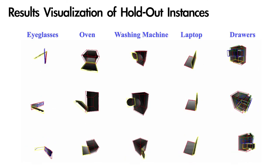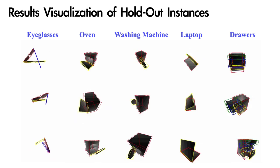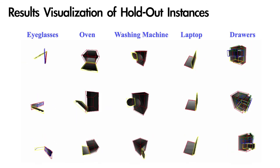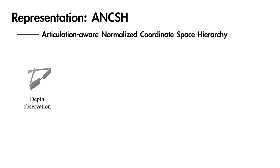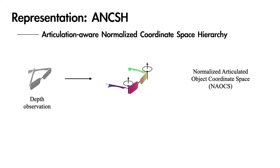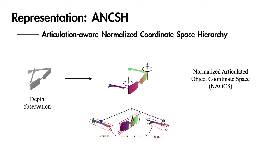Our method can generalize well to novel instances, handling large variations in articulation, viewpoint, and self-occlusion pattern. We introduce our novel representation: Articulation Aware Normalized Coordinated Space Hierarchy, or ANCHE for short. ANCHE is a two-level hierarchy of canonical spaces composed of Normalized Articulated Object Coordinated Space, NOX, at the root level and Normalized Part Coordinated Spaces, NPCS, at the leaf level.